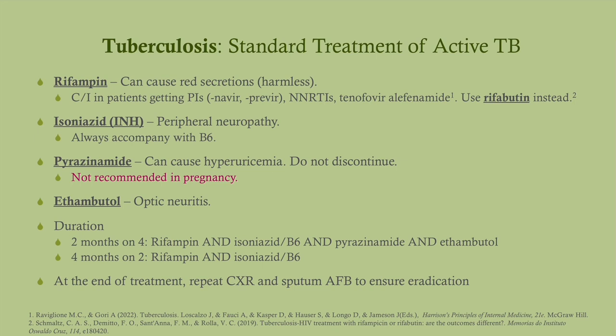So these are the four drugs: rifampin, isoniazid, pyrazinamide, and ethambutol. You need to know the side effects of these medications because that's commonly tested on the exam. Rifampin is easy — it causes red secretions. R for rifampin, R for red. These secretions are harmless but it's going to freak people out — they're going to go home, pee orange-red, and think they're peeing blood. It can be alarming but it is harmless.